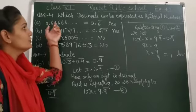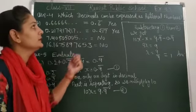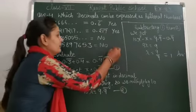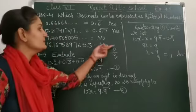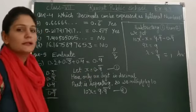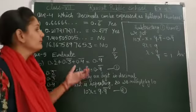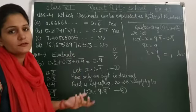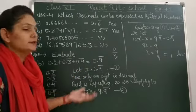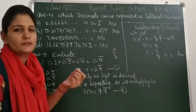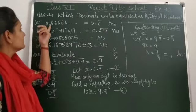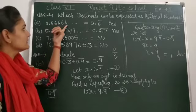Question number 4 is which decimals can be expressed as rational numbers? Rational number, you all know P upon Q form, which we can write will be rational number. Those who cannot write will not be rational number. So if you take long method, you will have a very lengthy question. This is a very simple tactic, without any calculation you can answer this question.